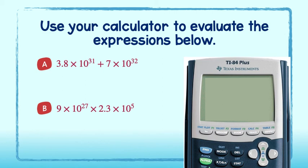We've got 3.8 times 10 to the 31st plus 7 times 10 to the 32nd. And enter. Our answer is 7 and 38 hundredths times 10 to the 32nd.